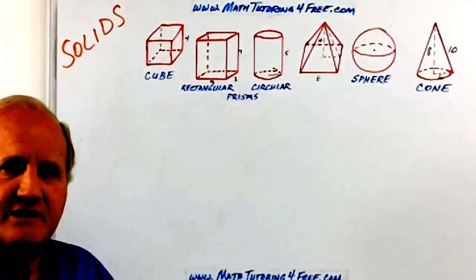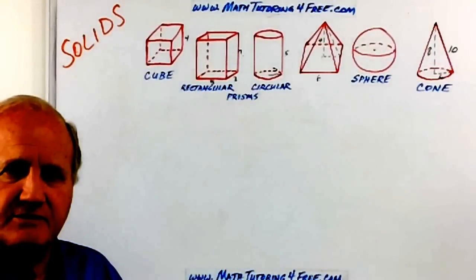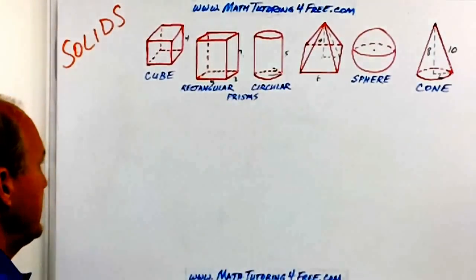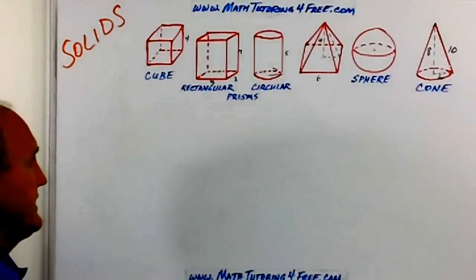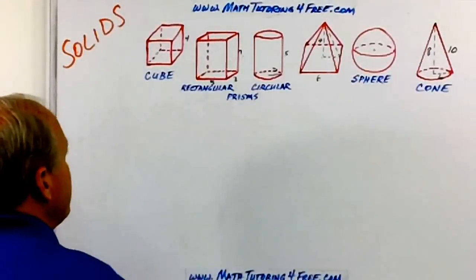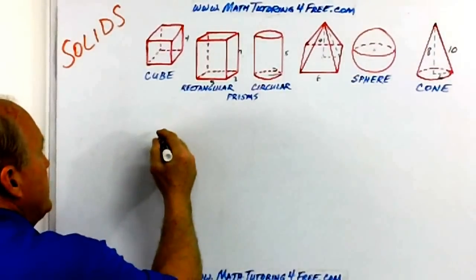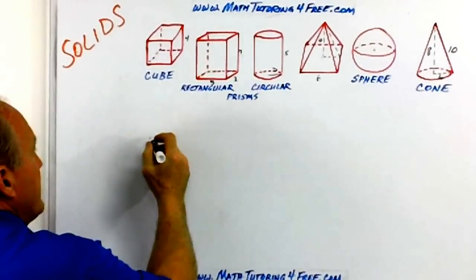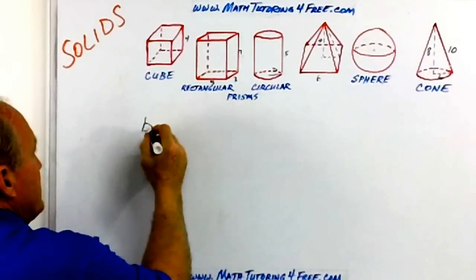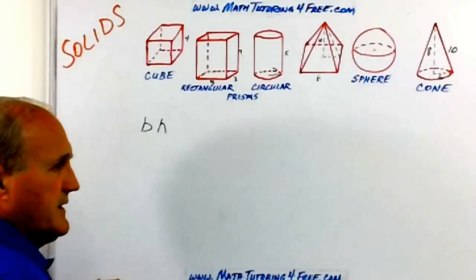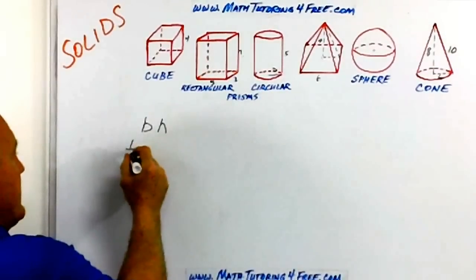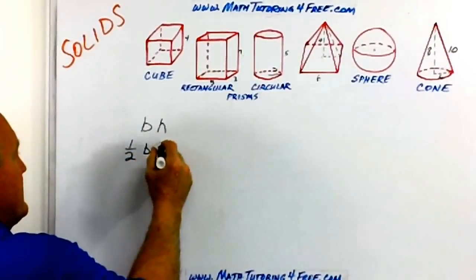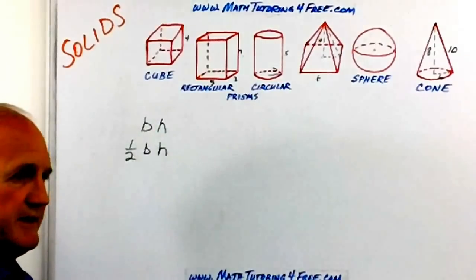The volume is how much that vessel can hold. If you remember when we were finding areas, the area of a rectangle was equal to the base times the height, and the triangle was half of that. So it was one half times the base times the height.